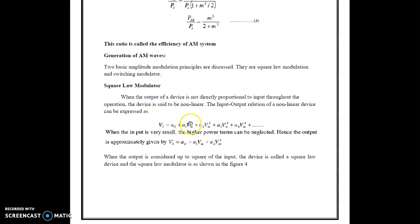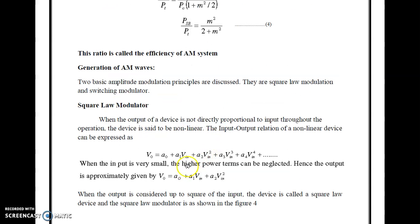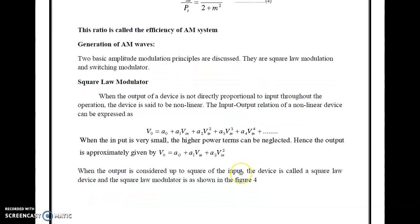When the input is very small, the higher power terms will be neglected, because the signal voltage harmonics generated by terms beyond the square have approximately negligible effect on the output. That's why we use up to the 3rd or 4th power. The output is approximately given by V0 = A0 + A1·Vin + A2·Vin². When the output is considered up to the square of the input, the device is called a square law device.